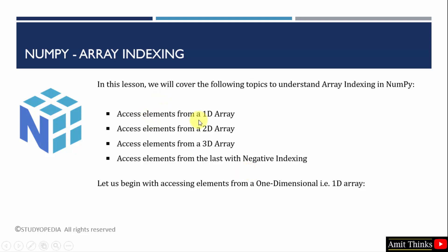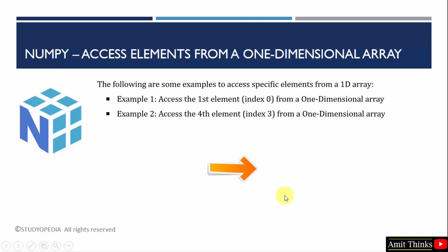First we will begin with accessing elements from a 1D array. We have two examples: first we will access the first element and then we will access the fourth element. For the first element, you need to use index 0. For the fourth element, you need to use index 3.